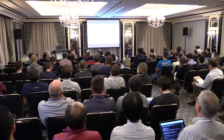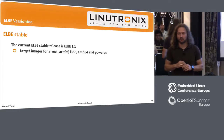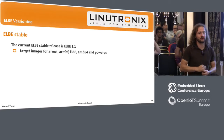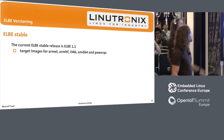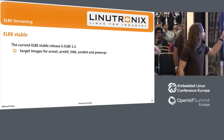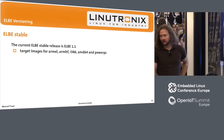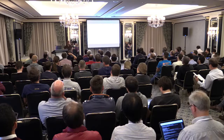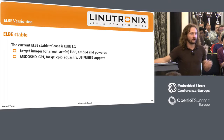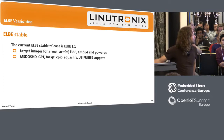At the moment we have a stable version 1.1 — version 1 was released last Christmas, and I hope to get version 2 out by Christmas this year. Version 1 supports target images for ARM little endian, ARM hard float, x86 32 and 64 bit, and PowerPC. Debian supports a few more architectures but we just haven't tested Elbe on those — maybe it works, but no guarantee.